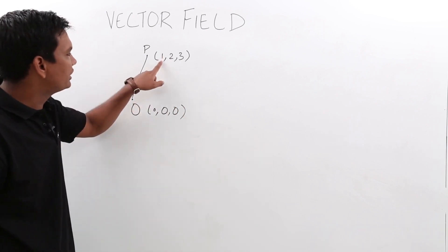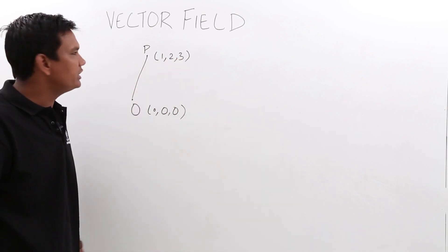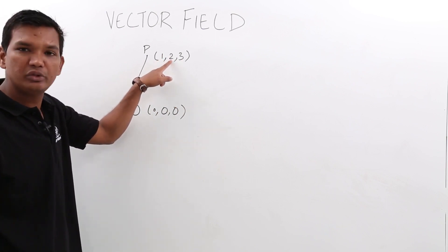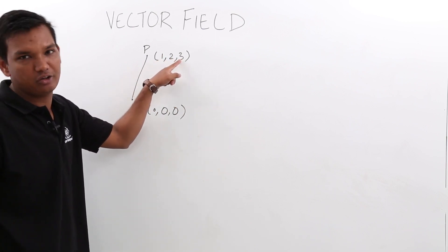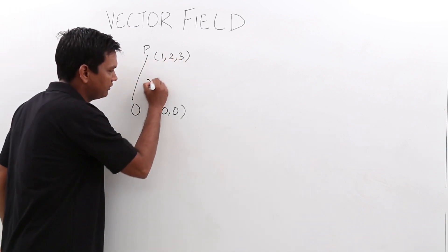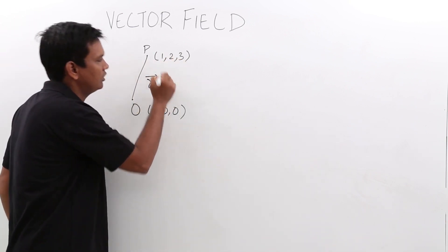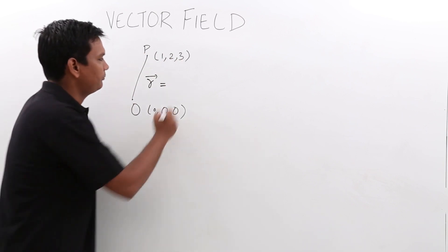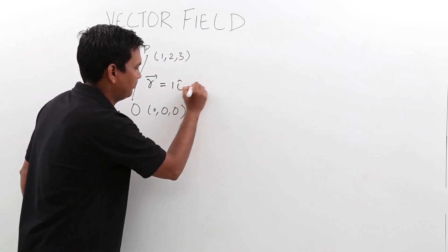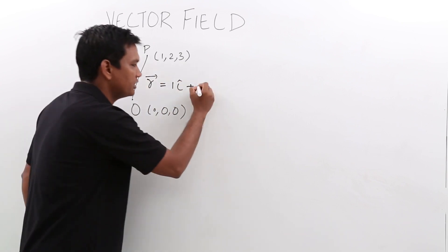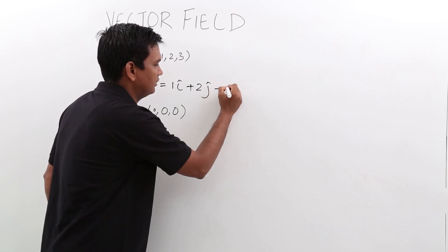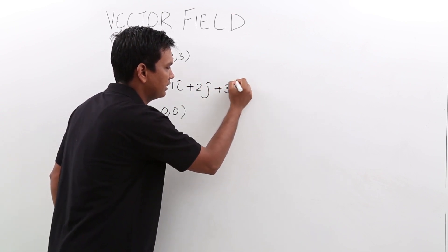Now this coordinate is 1, 2, 3. This means it is one unit along the x-axis, two units along the y-axis, and three units along the z-axis. If I write the r vector for this coordinate, it would be 1 i cap plus 2 j cap plus 3 k cap.